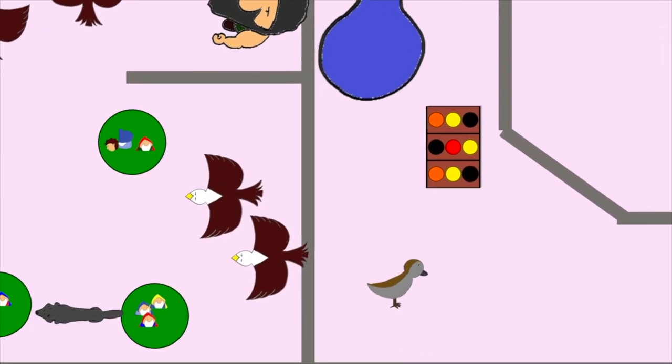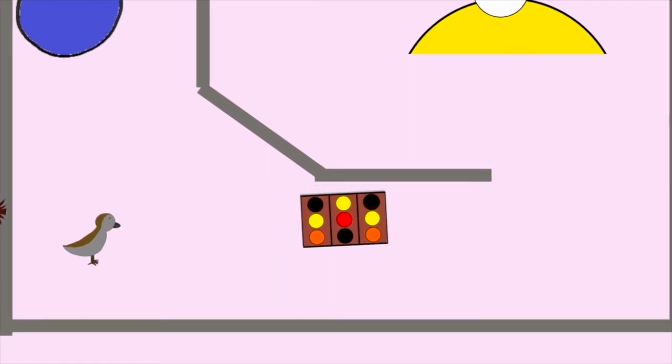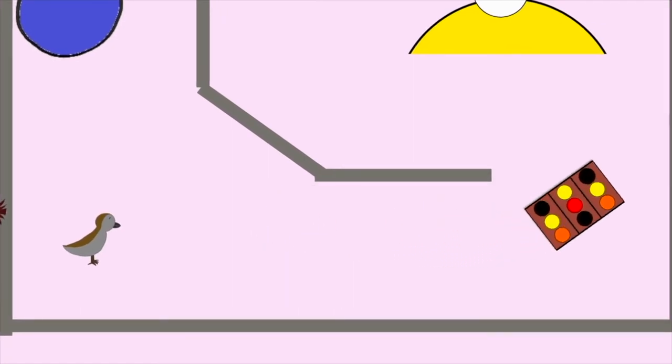Then you see the thrush knock, and the last light of the setting sun of Durin's day projects the keyhole on the door. Then the door swings open into the Lonely Mountain secret tunnel,